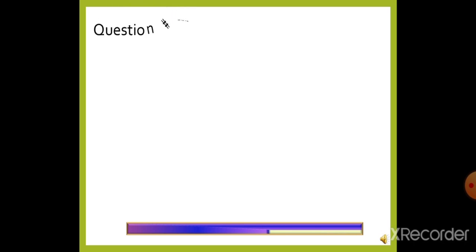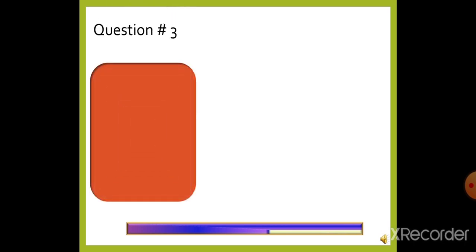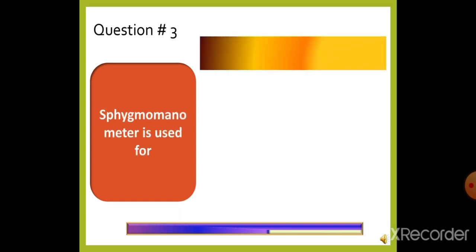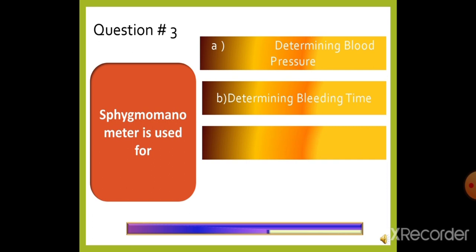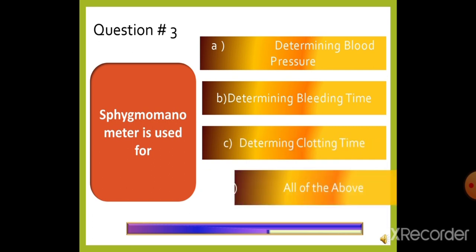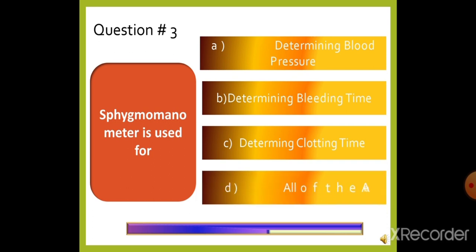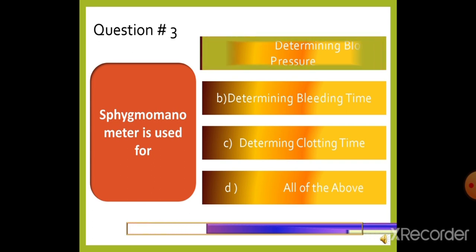Question 3: A sphygmomanometer is used for — option A: Determining blood pressure, option B: Determining bleeding time, option C: Determining clotting time, or option D: All of the above. The right answer is option A, determining blood pressure.